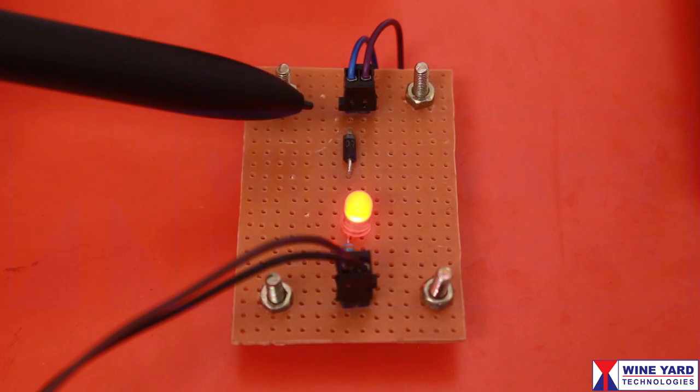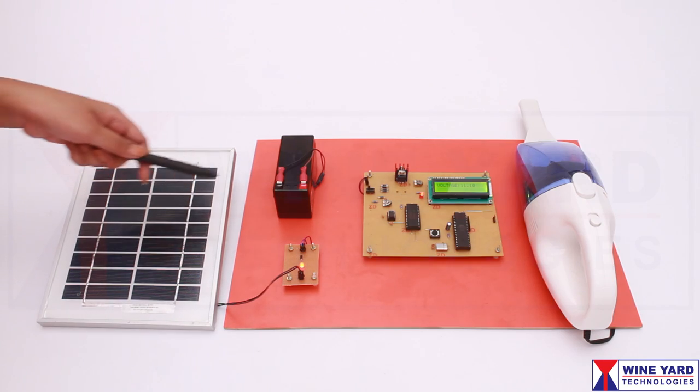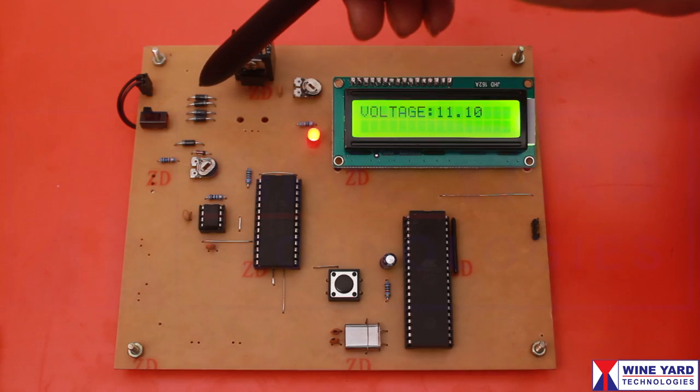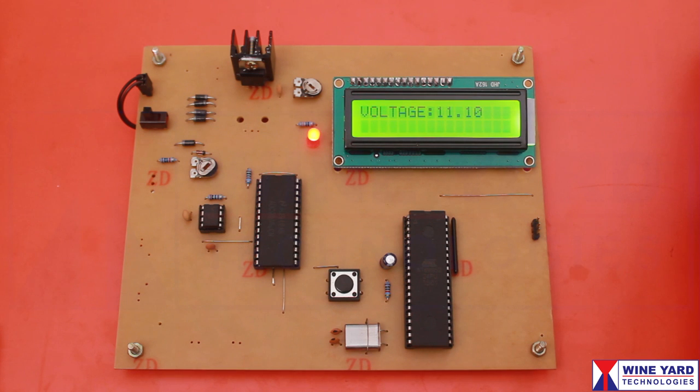This diode prevents reverse current flow from battery to the solar panel. This bridge rectifier gives protection to the circuit even if you connect the battery in reverse.